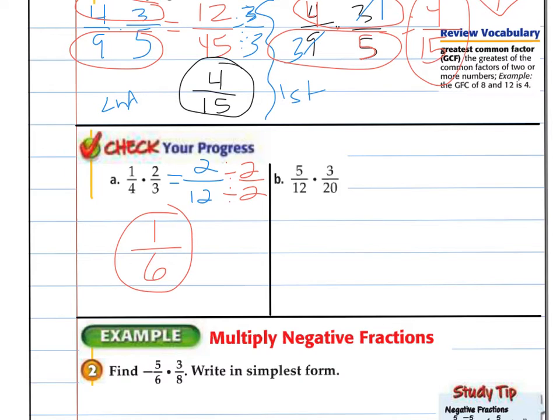Here I'm going to cross cancel first. Because I don't really want to deal with 12 times 20. So I cross cancel. 5 goes into 5 once. 5 goes into 20 four times. 3 goes into 3 once. 3 goes into 12 four times. So I'm left with 1 fourth times 1 fourth. And now I'm able to multiply the top. 1 times 1 is 1. 4 times 4 is 16. So 5 twelfths times 3 twentieths is 1 sixteenth.